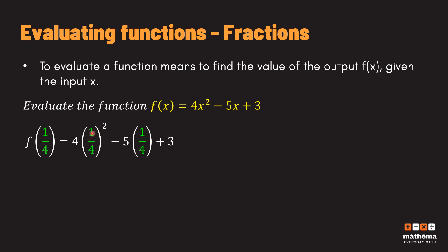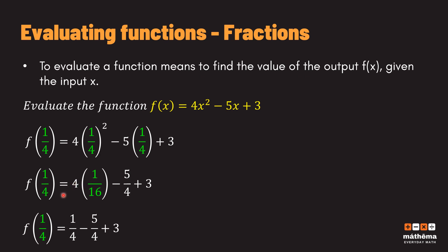We distribute the exponent: one squared is just one, and four squared is equal to sixteen. Then multiplying five by one fourth gives five over four. Now we multiply four by one over sixteen — four times one is four, over sixteen — which simplifies to one over four. So we have 1/4 minus 5/4 plus 3.